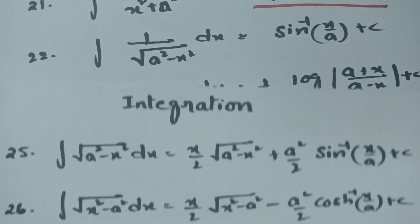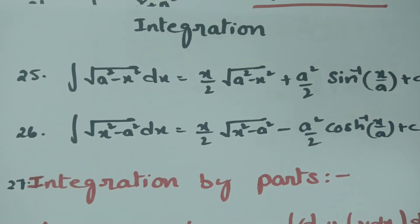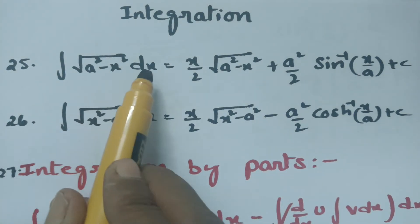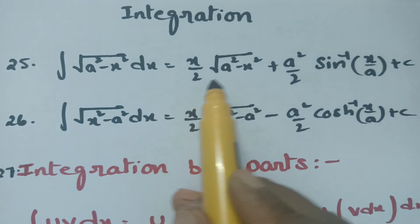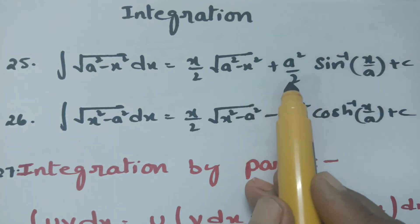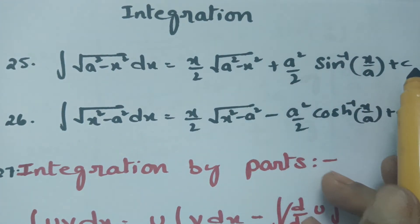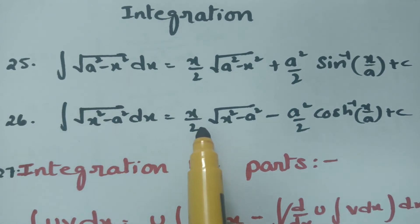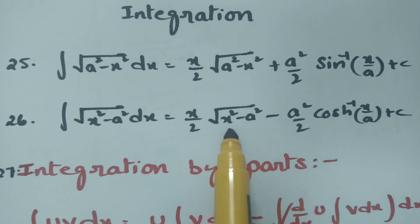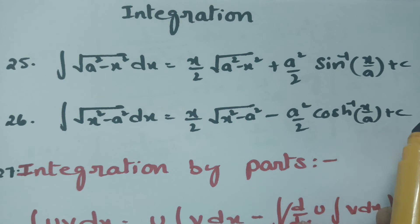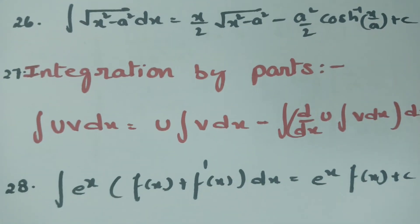These are most important and repeatedly occur while solving differential equations problems. Integral of √(a² − x²) dx is nothing but (x/2)√(a² − x²) + (a²/2) sin⁻¹(x/a) plus c. Integral of √(x² − a²) dx is equal to (x/2)√(x² − a²) − (a²/2) cosh⁻¹(x/a) plus c. This is also integration by parts.